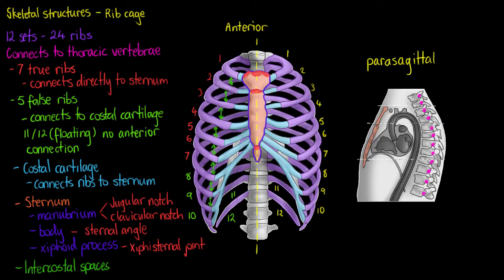That covers all the bones and features we need to know of our ribcage. On this parasagittal view for reference we have our heart, our aorta, and our diaphragm — the muscle that separates our thoracic cavity from the rest of our internal viscera. I hope this video has been helpful, and as always thanks for watching.